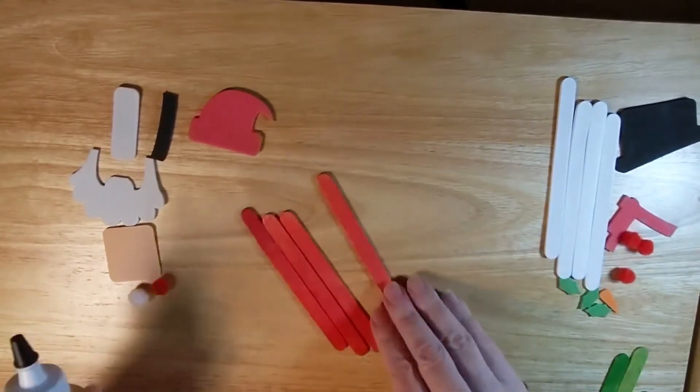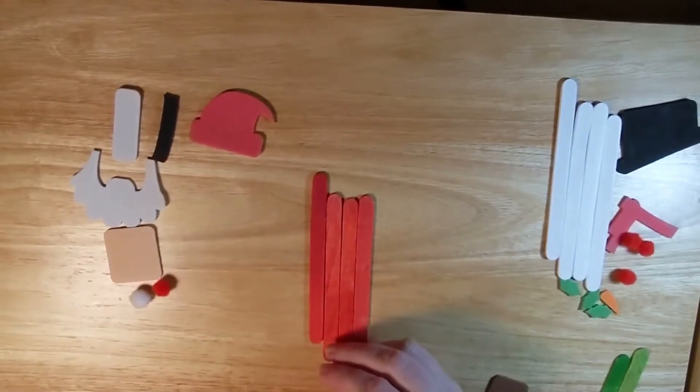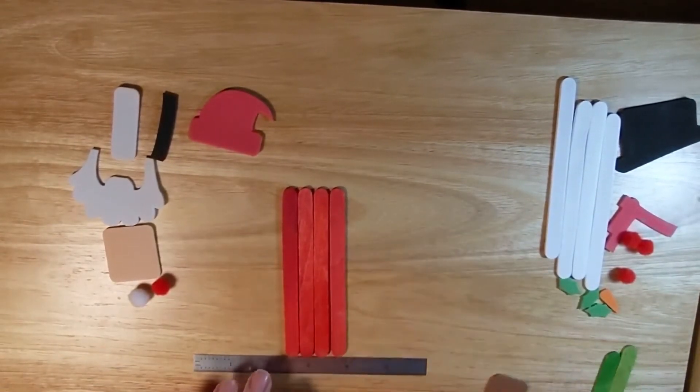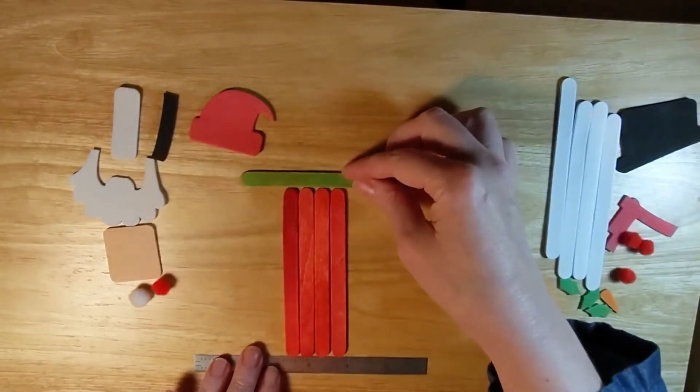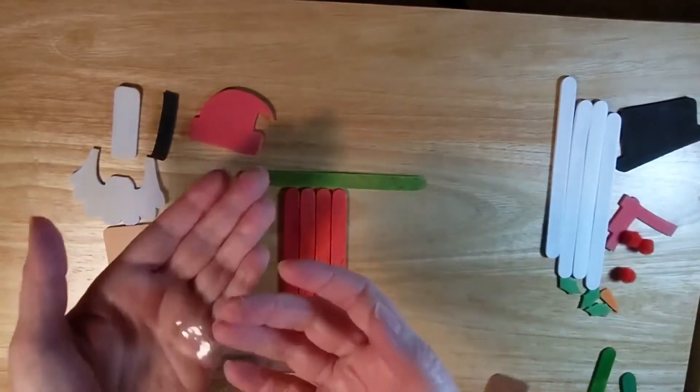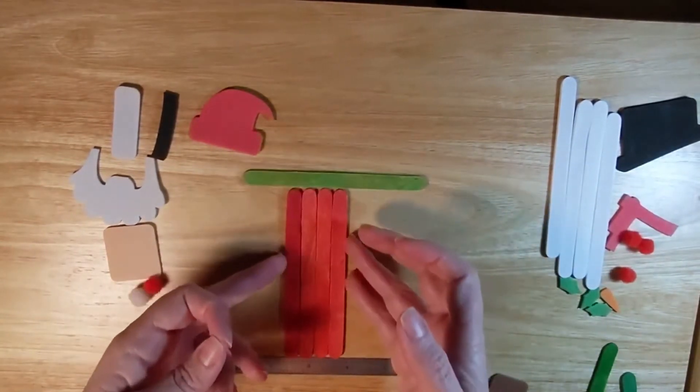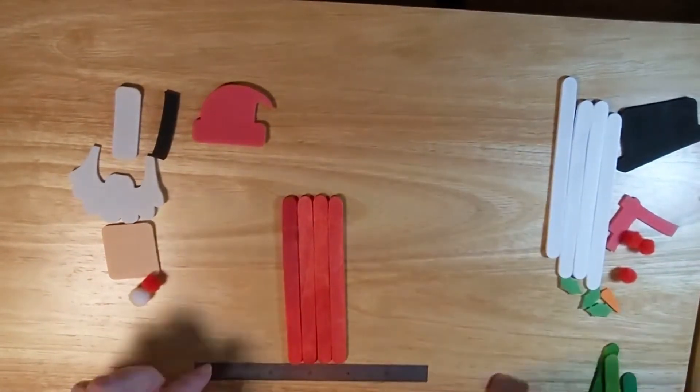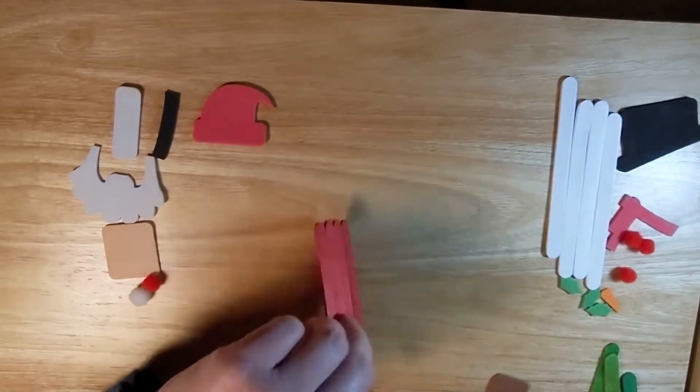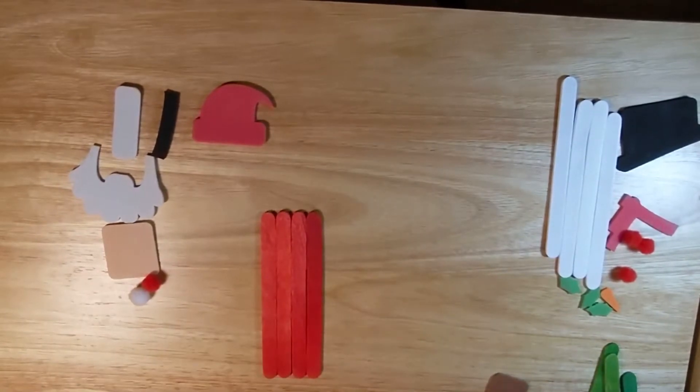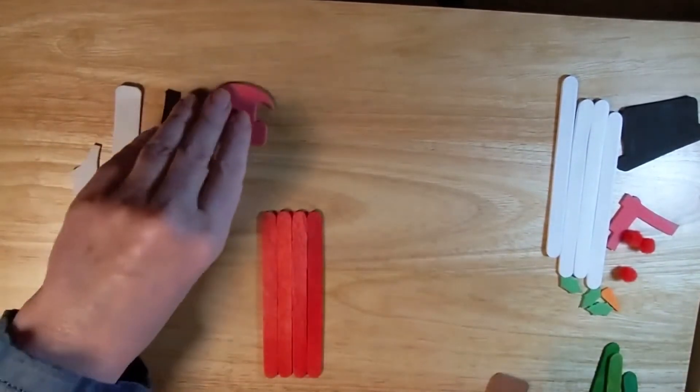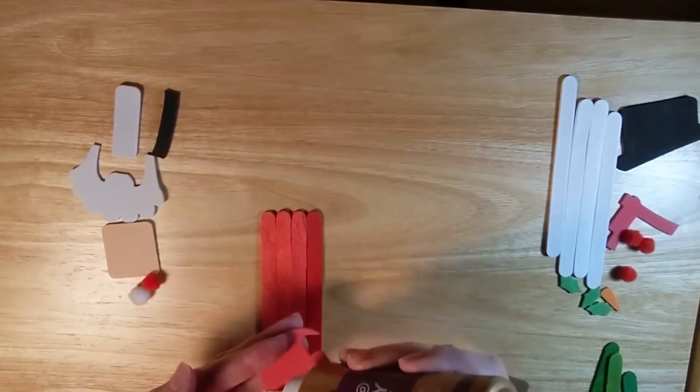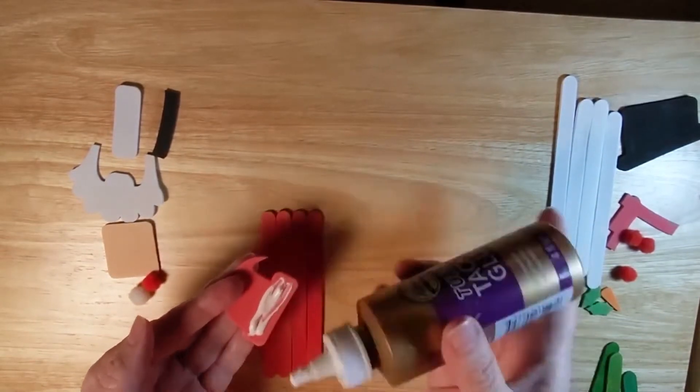Here I have four popsicle sticks that are the same size. I'm going to level them up and make sure they're even. I'm using a piece of packing tape to tape the four popsicle sticks together, and I'm going to trim down the sides. This is a little bit of an ornate shape for a Santa hat.